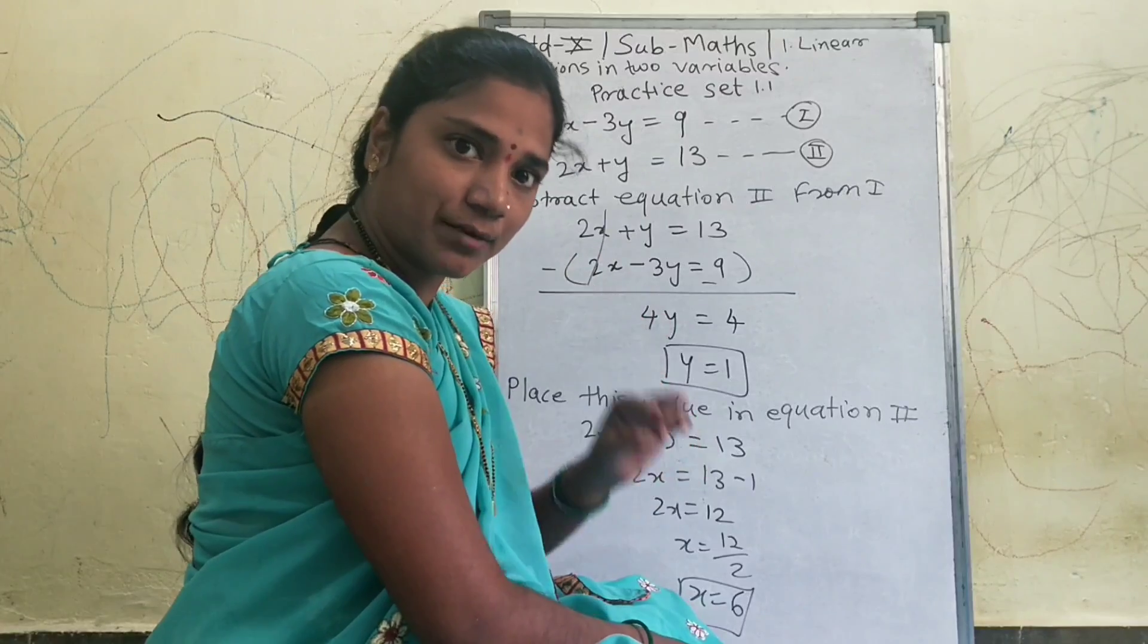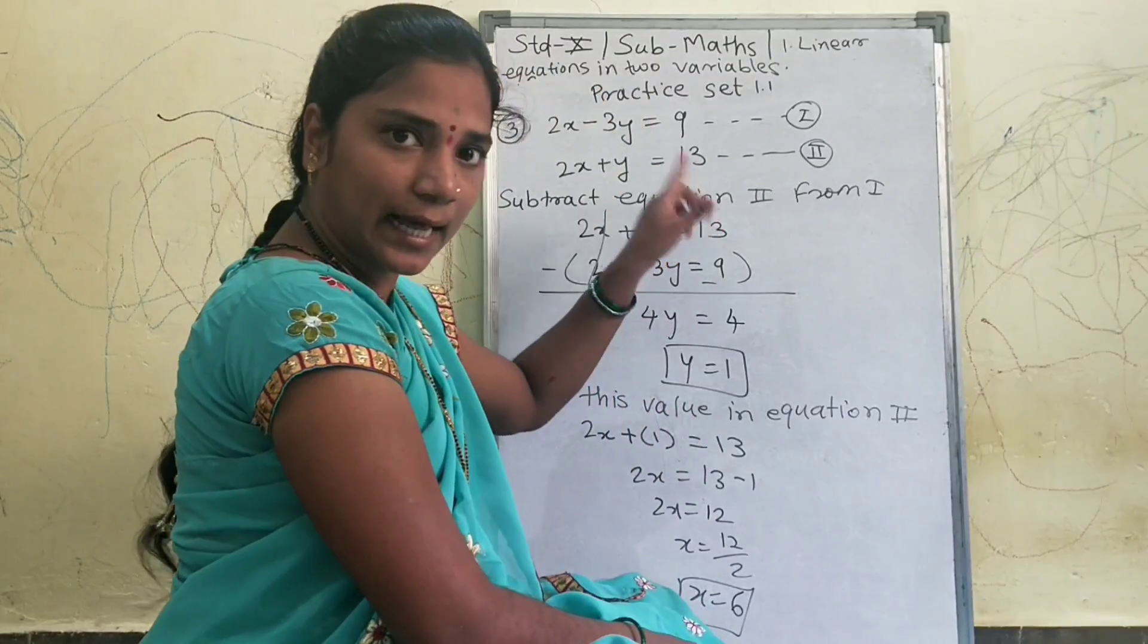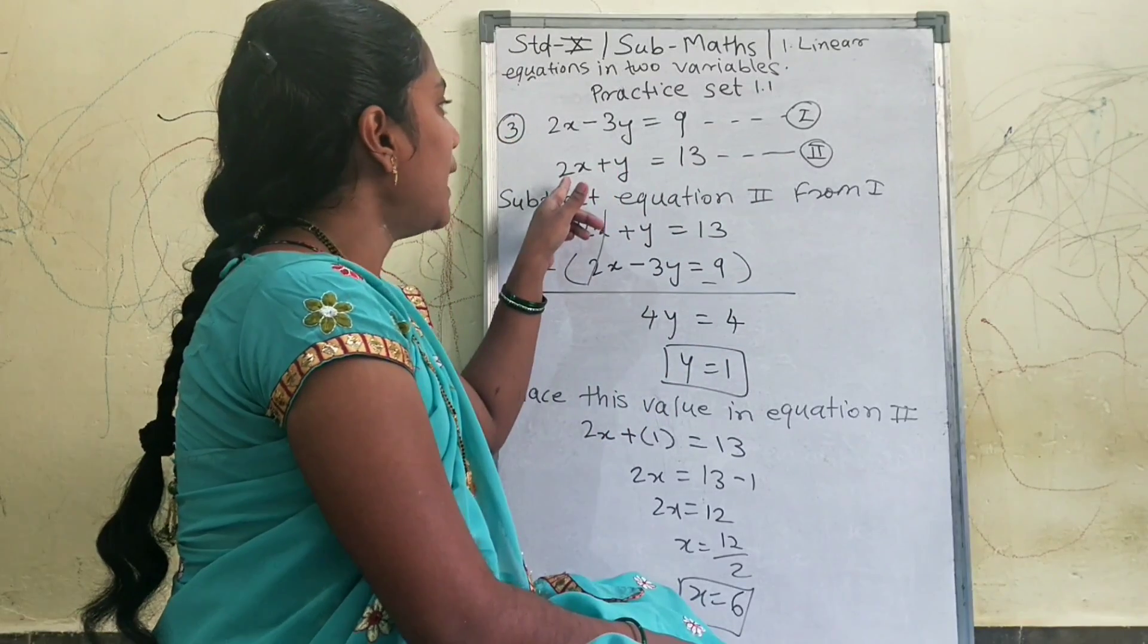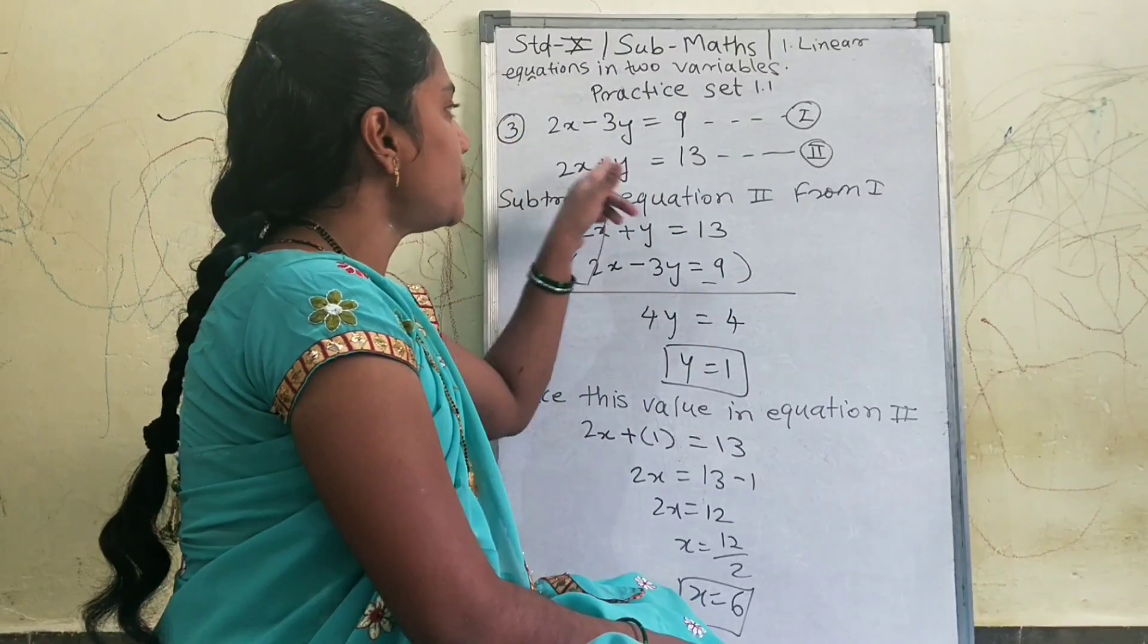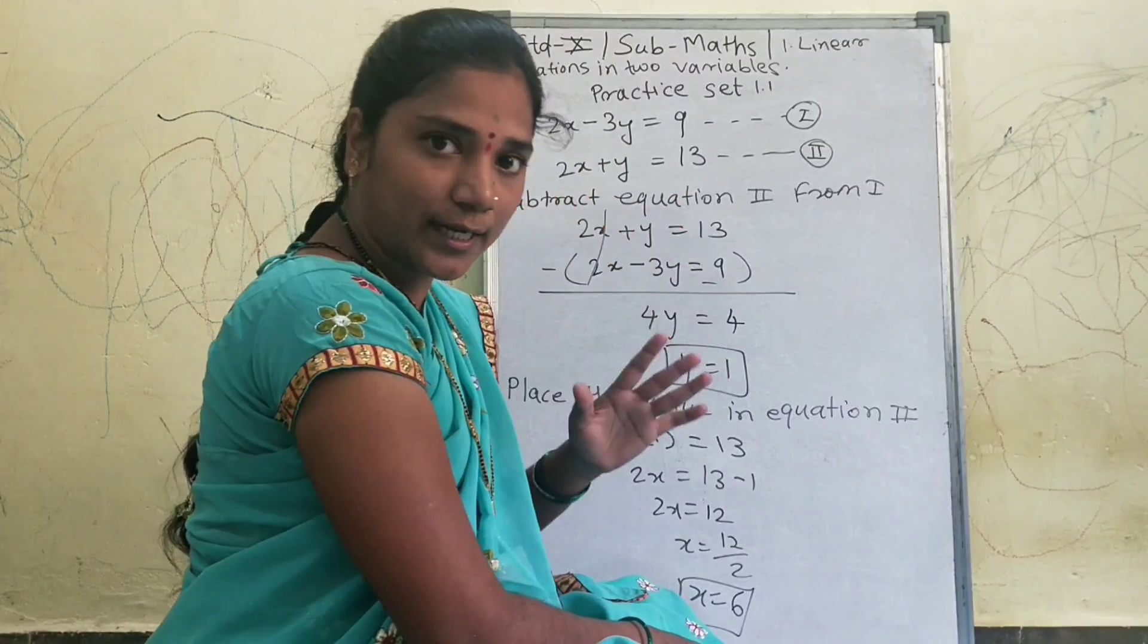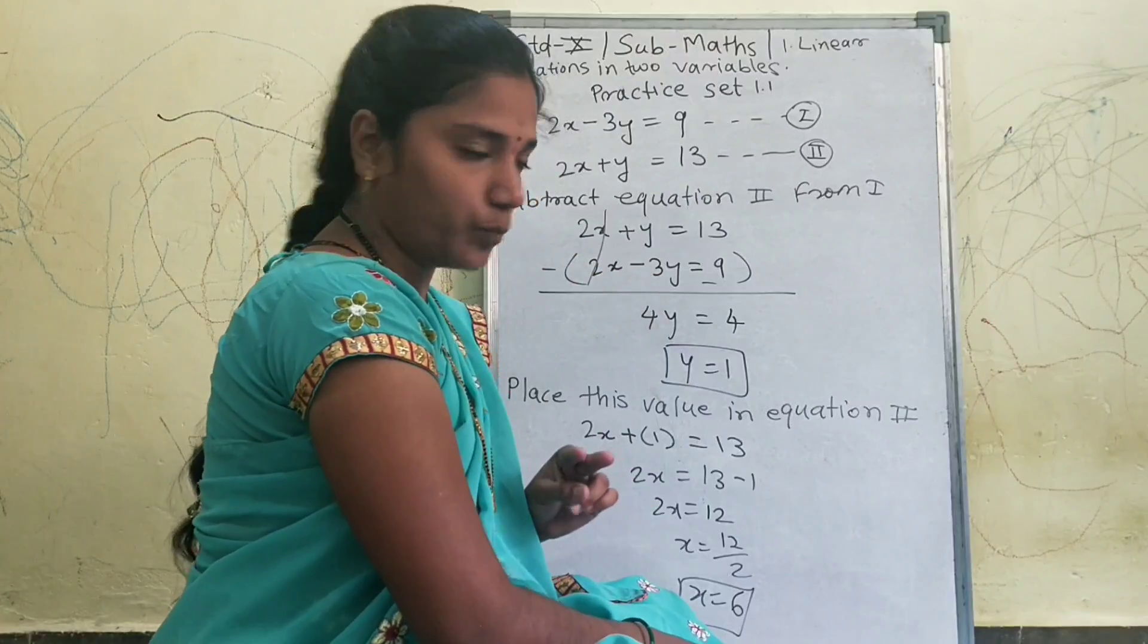Two simultaneous equations are given in this question. 2x minus 3y is equal to 9, I give number 1 for this equation, and 2x plus y is equal to 13, I give this equation number 2.